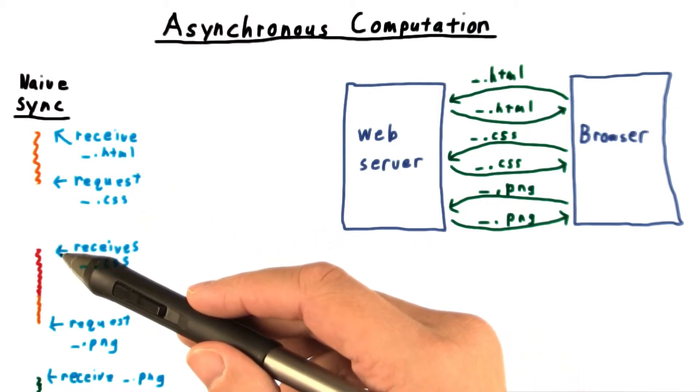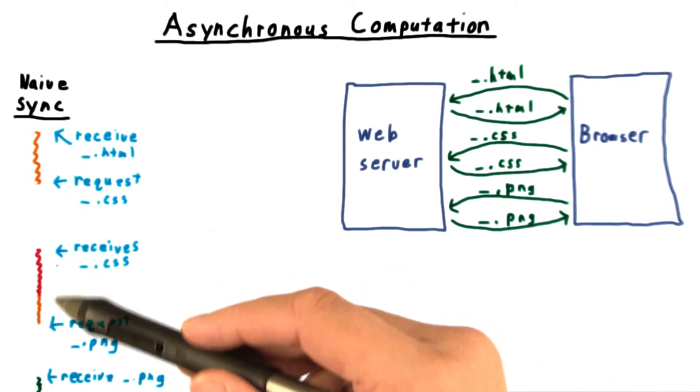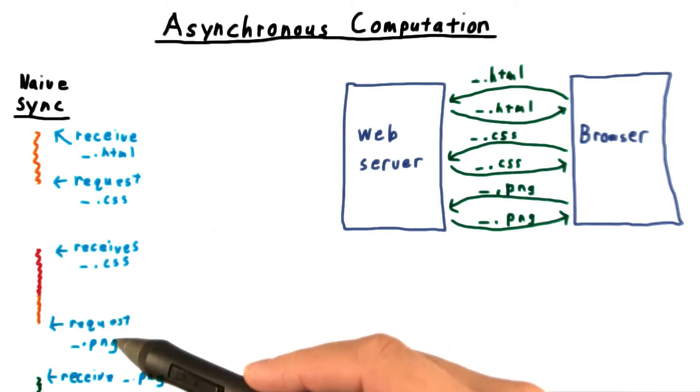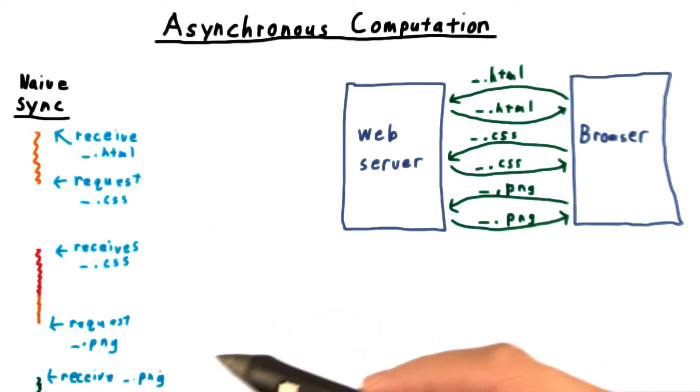After receiving the response, it could then process the CSS file and then continue its work until it discovers that it needs an image file. Make that request, wait till it receives it, and then process that image file.